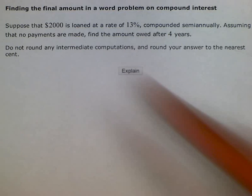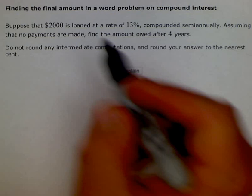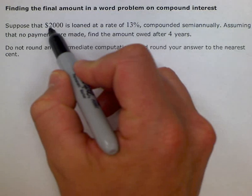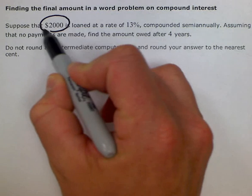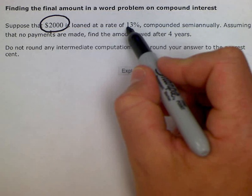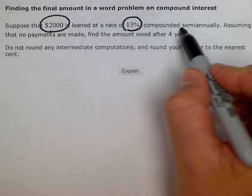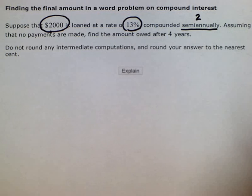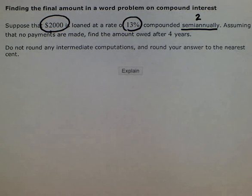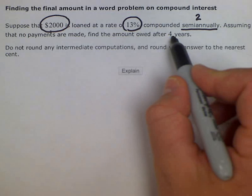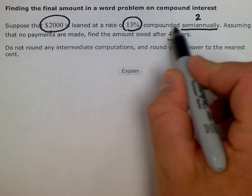We need to circle our important information. So we start with a $2,000 loan and our interest rate is 13%, and it's compounded semi-annually, which is two times a year. Assuming no payments are made, how much is going to be owed after four years is what we're looking at.